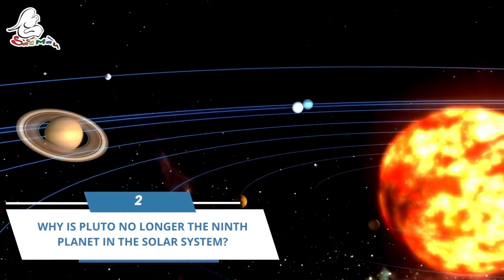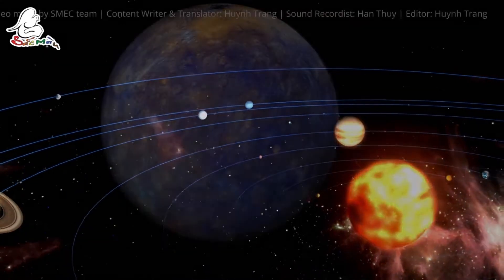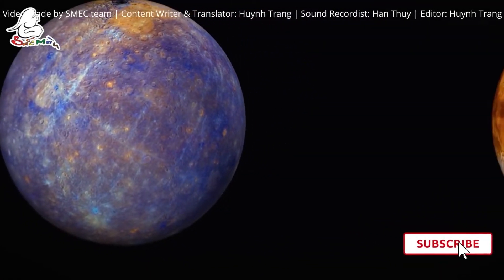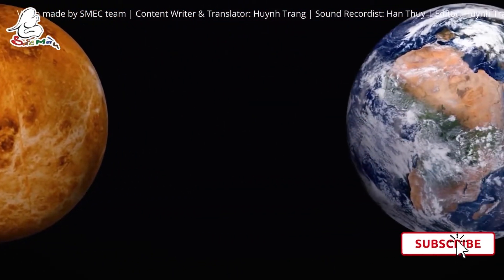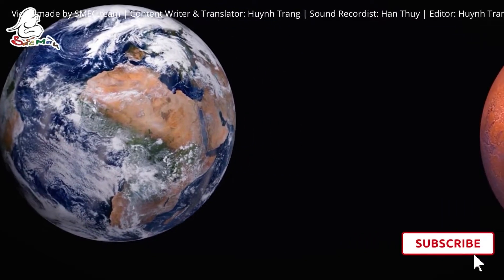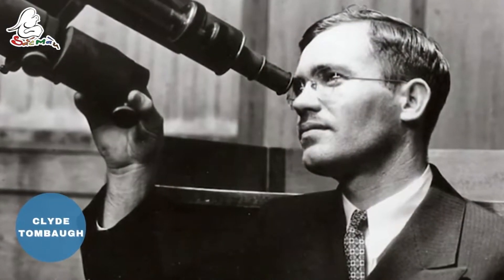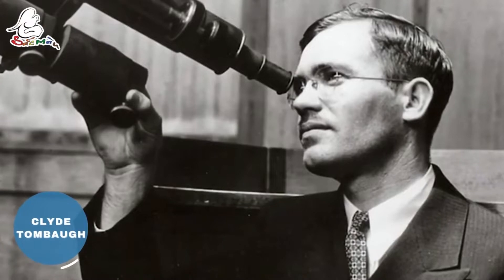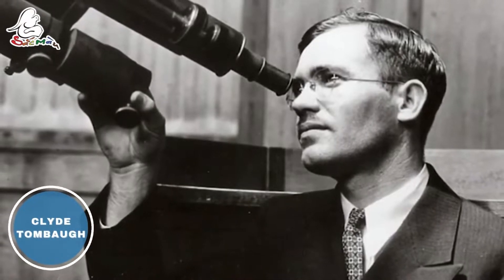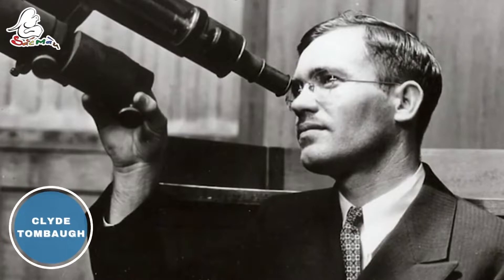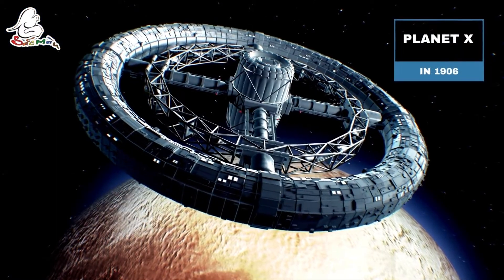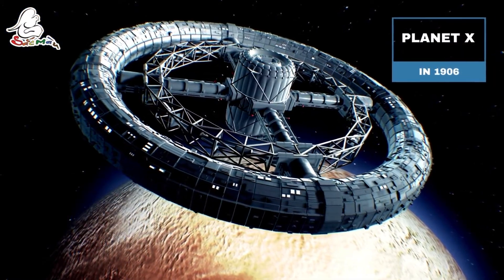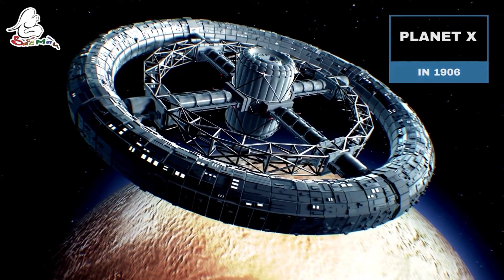Why is Pluto no longer the ninth planet in the solar system? First, we will look at the Pluto findings that elevated it to the ninth planet in the solar system before it was degraded. Kai Tamba, an American astronomer, discovered Pluto for the first time in 1930 at the Lowell Observatory. Percival Lowell, the observatory's founder, began hunting for the planet X, the solar system 9 planet, in 1906.